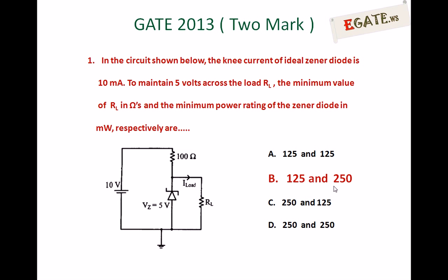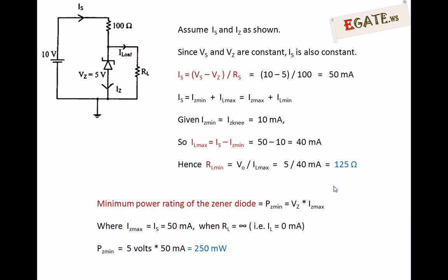Let us calculate how these two values are obtained. Take the diagram — this circuit is a simple Zener voltage regulator. Assume the currents IS (source current) and IZ (Zener current) as shown in the circuit.